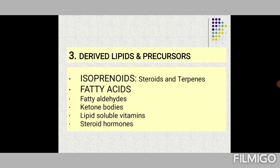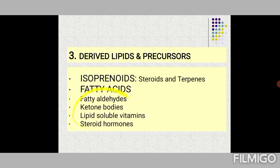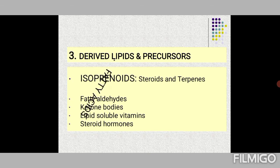Derived lipids include the isoprenoid group, which includes steroids and terpenes — all having isoprene structures. Fatty acids are precursors of lipids, giving rise to triglycerides and other fats. Fatty aldehydes, ketone bodies, lipid-soluble vitamins, and steroid hormones are also derived lipids. We must first cover fatty acids — their structure and classification — because without a thorough knowledge of fatty acid structure, we cannot proceed further with lipid chemistry.